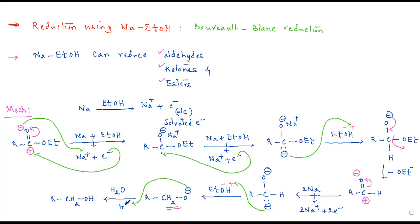Knowing the mechanism will surely help you out. Look at this — R-CH2-OH is what we get, along with O minus and H+. So this is how sodium in ethanol can reduce aldehydes, ketones, and esters. The name of this reaction is Bouveault-Blanc reduction.